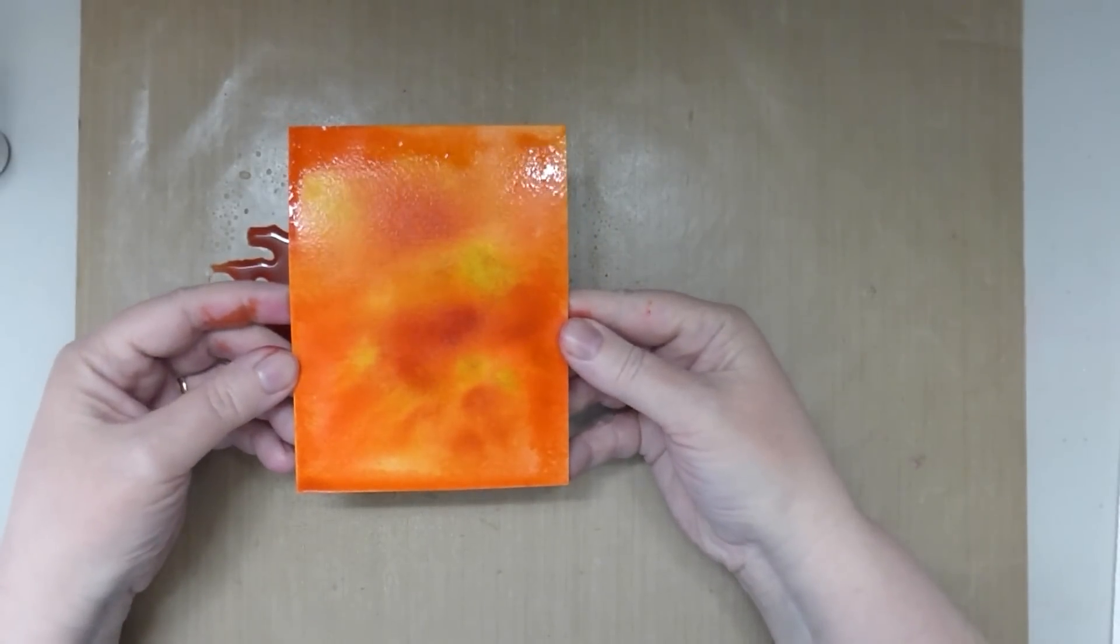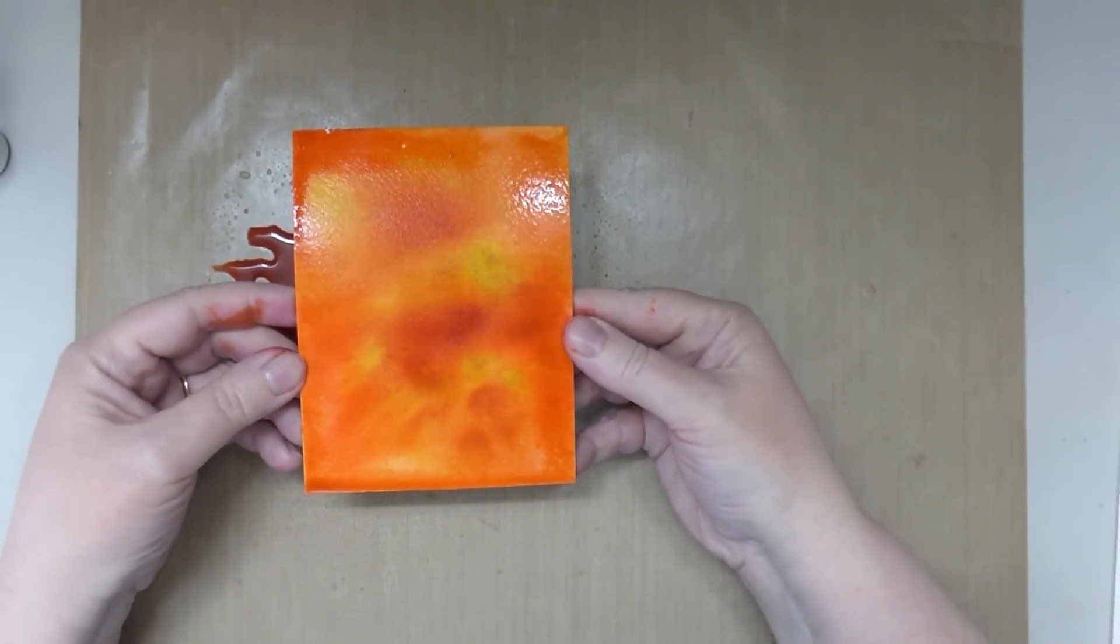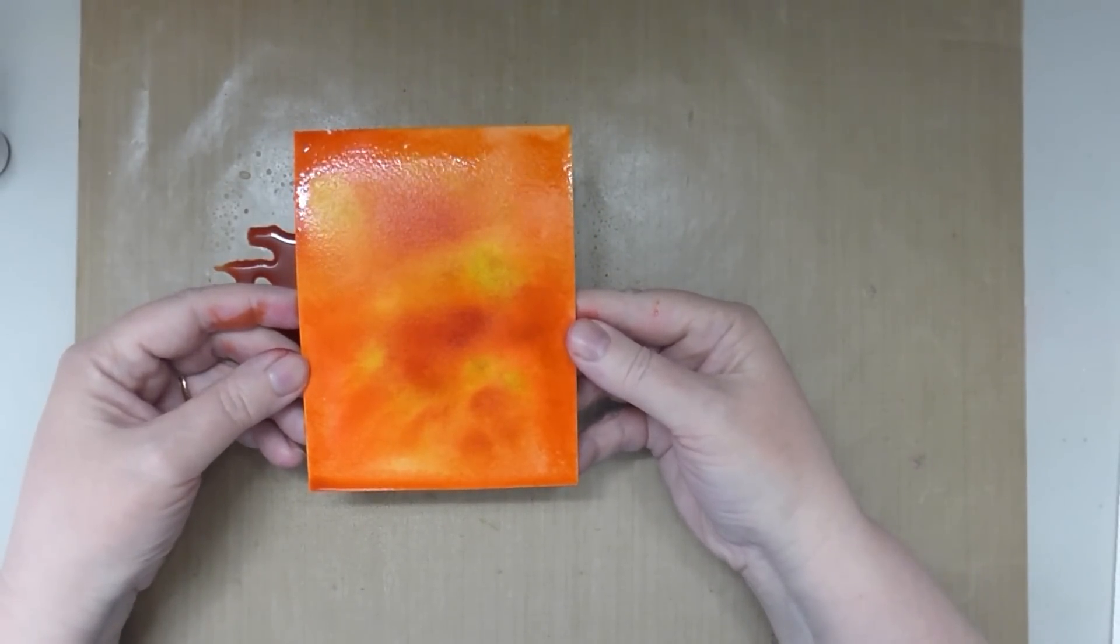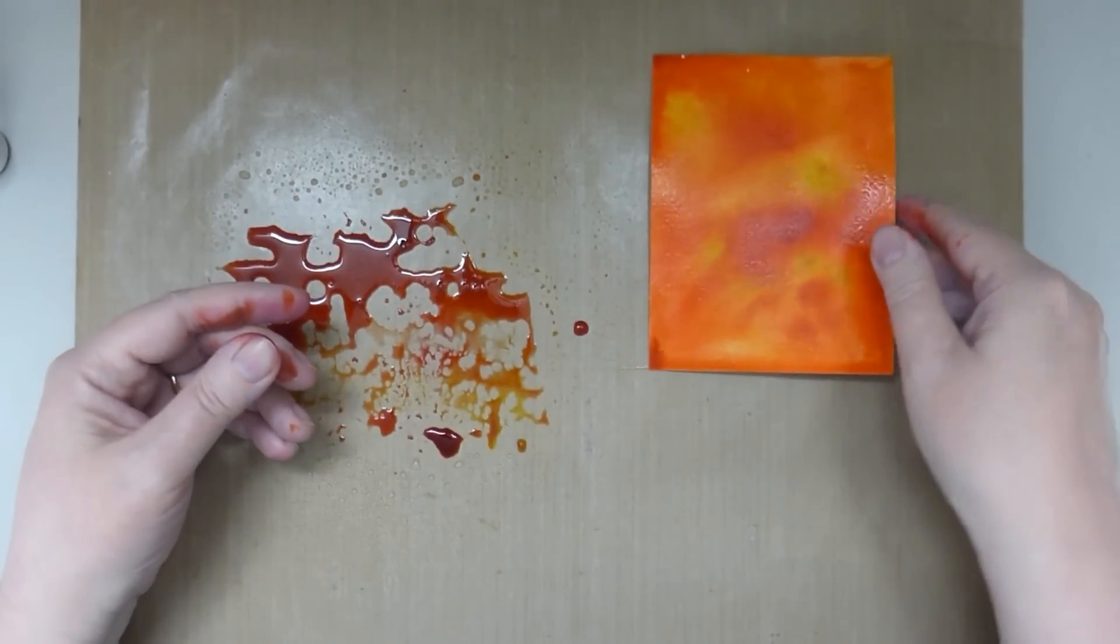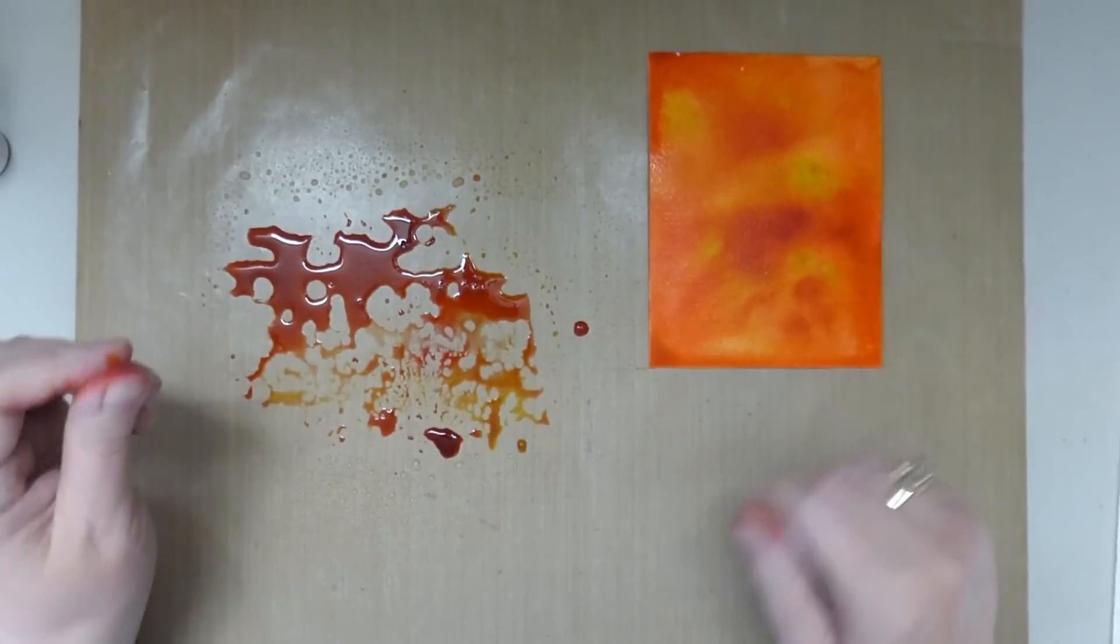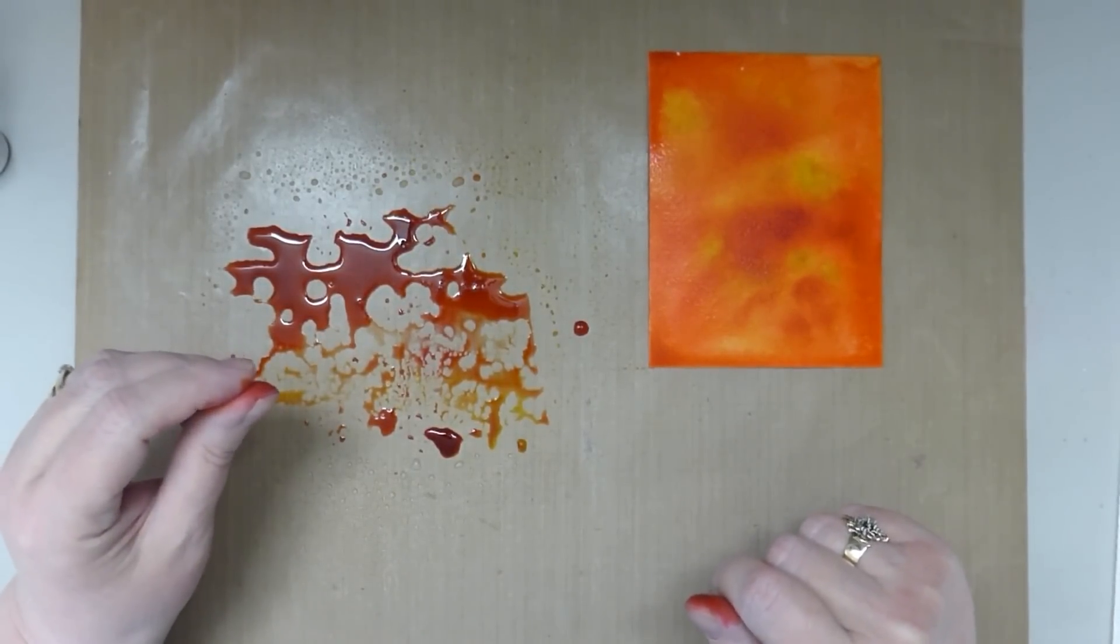So that is the saturated watercoloring technique. Like I said, it's very simple, easy to do, and you end up with this beautiful background that you can use for the back of your cards or you can die cut and use as embellishments on your card.